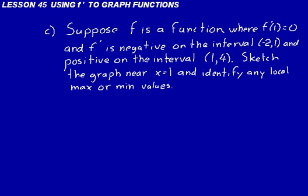Let's do one more problem. This one says, suppose f is a function where f prime of 1 is equal to 0. In other words, the slope is 0 when x equals 1. f prime is negative on the interval from minus 2 to 1 and positive on the interval from 1 to 4. Sketch the graph near x equals 1 and identify any local max or min values. We should immediately recognize when the slope is 0, we'll have a local maximum or minimum there.